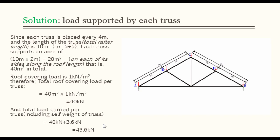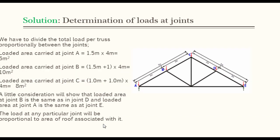Remember, we said the self-weight of the truss itself is 3.6 kN, that's for a wooden truss. Now, we determine the loads at the joints. To do that, we have to divide the total load per truss proportionally between the joints.